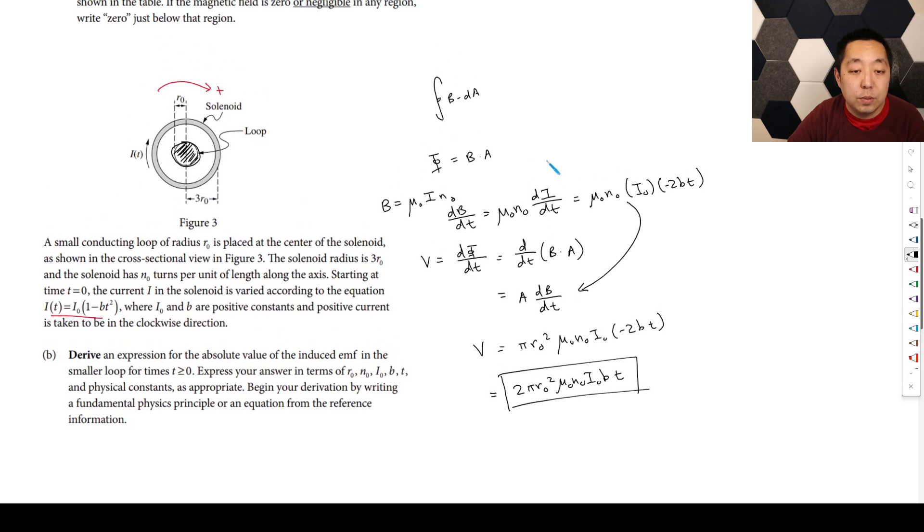So the flux, we're going to go back to our flux equation, was B times the area. And the B was mu naught I N. So this is going to be mu naught N naught pi R0 squared, and that's the area. And then B was equal to mu naught times I, which would be I naught times 1 minus BT squared. So that is our expression for the flux.